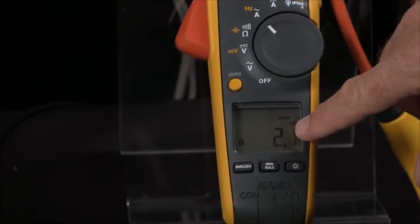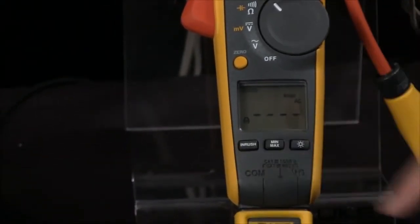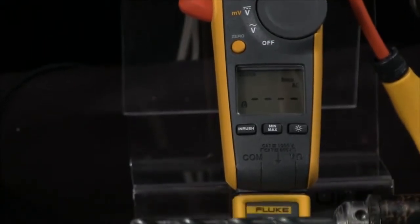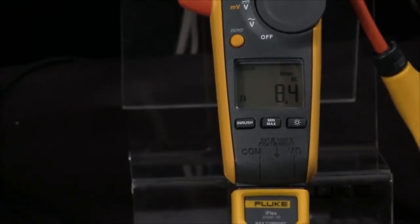To see what the starting or the inrush current is, I press inrush. The meter waits for the motor to start, and then it captures my inrush, so we can see that we have 8 amps versus the 2 amps.